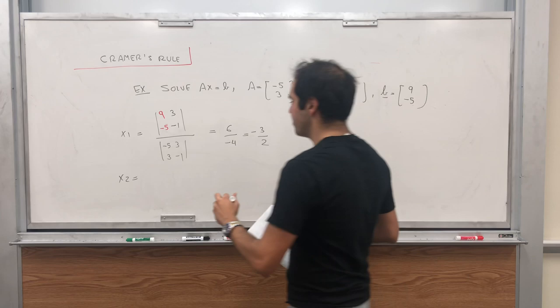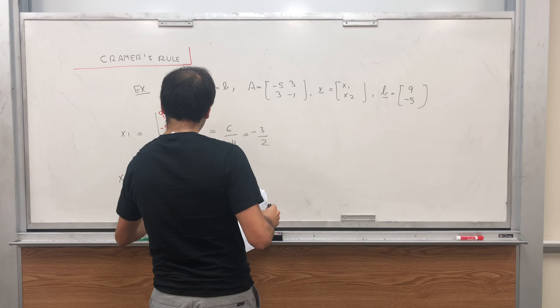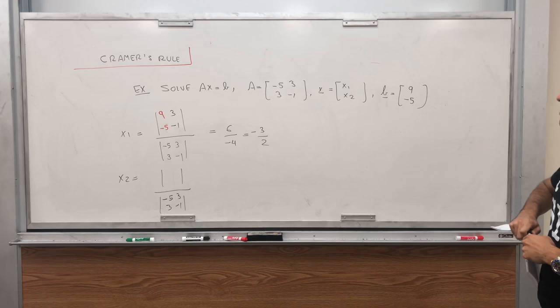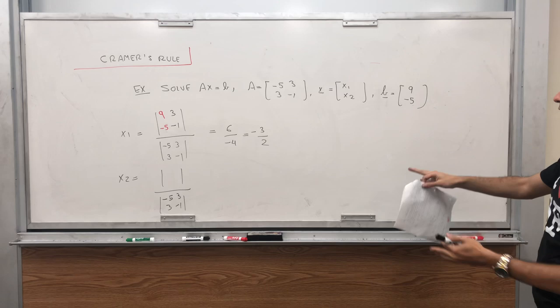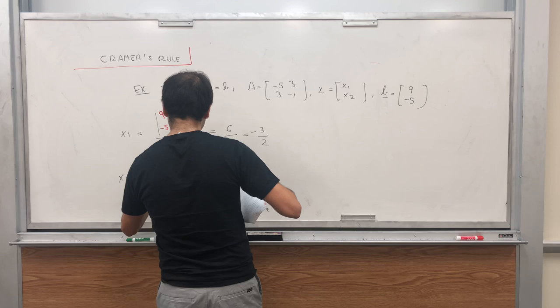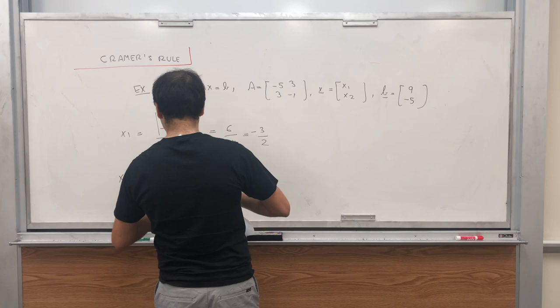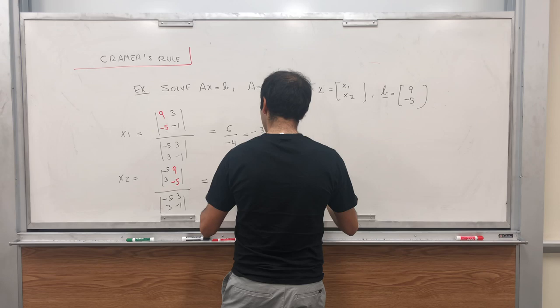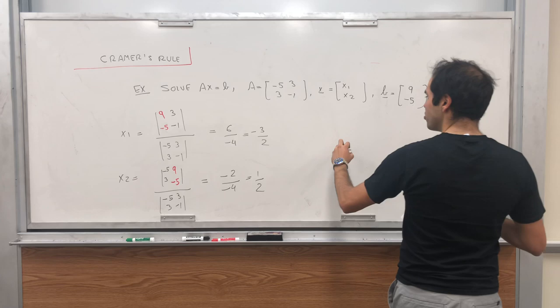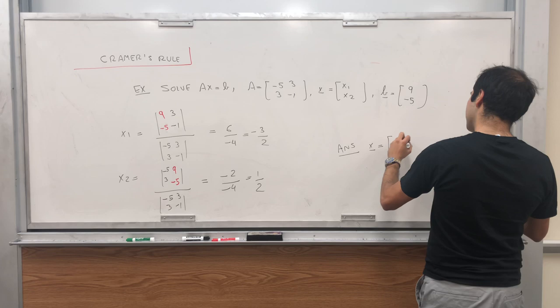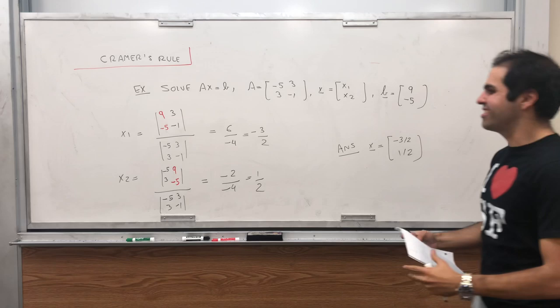And for x2 you do the same thing. The denominator is still the determinant of A, which we have calculated, so technically you don't have to re-evaluate this. For the numerator, this time you have A but you replace the second column by b. So this would be [9, -5; -5, 3], and if you do that you get -2 over -4, which is 1/2.